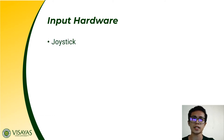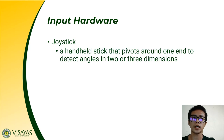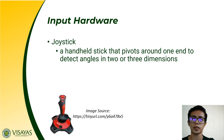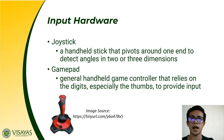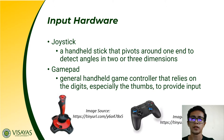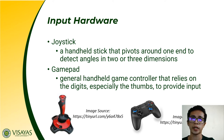Another input device is the joystick, which is a gaming device. It is a handheld stick that pivots around on one end to detect angles in two or three dimensions. Another gaming device is the gamepad, which is a handheld device that relies on the digits, especially the thumb, to provide input. You use your thumb to rotate and navigate your character when using a gamepad.